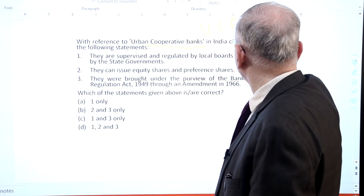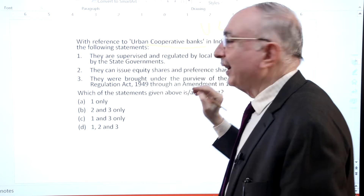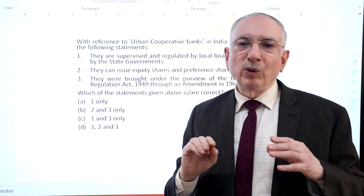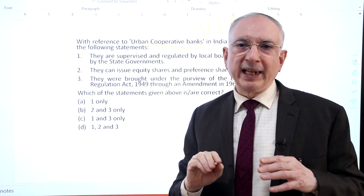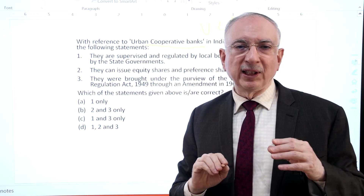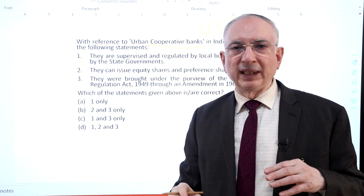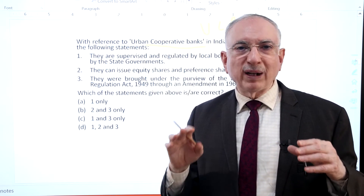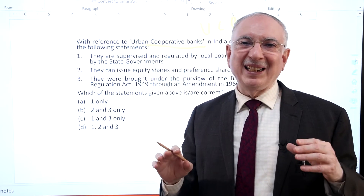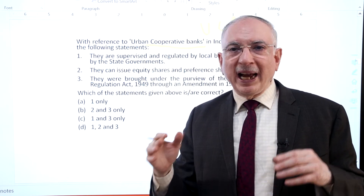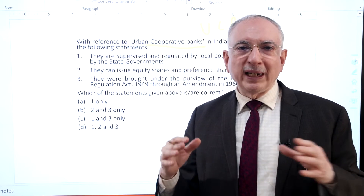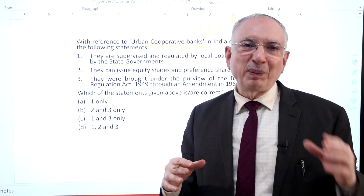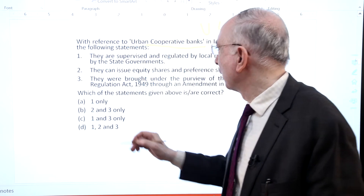This question is about urban cooperative banks. Large cooperative banks were brought under the purview of the Banking Regulation Act 1949 with effect from March 1966 and within the ambit of RBI supervision. This marked the beginning of an era of duality of control over these banks — banking-related functions governed by RBI, and registration, management, audit, liquidation, and so on governed by state governments as per the provisions of respective state acts. Hence statement 3 is correct.